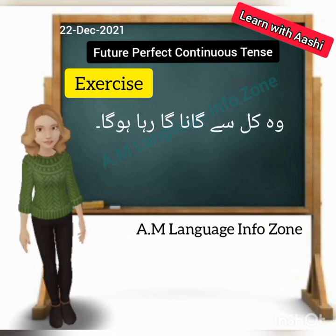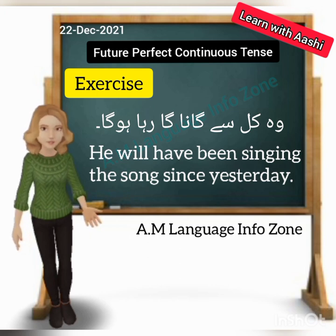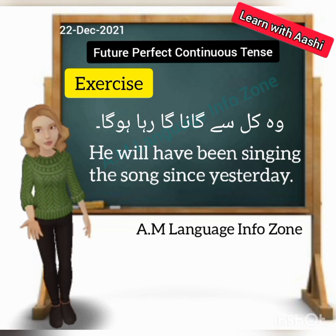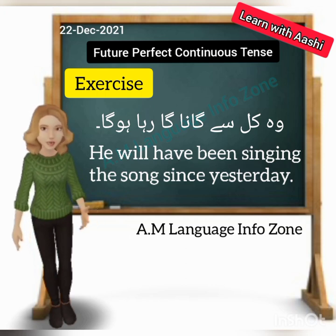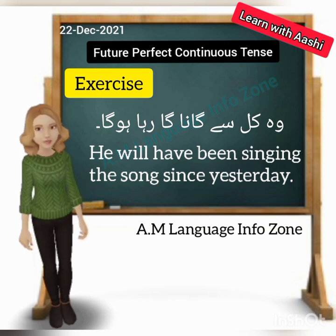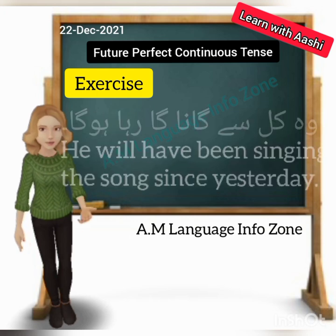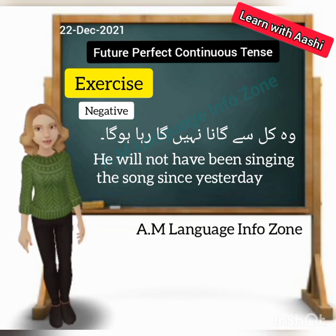'We will have been singing the song since yesterday.' An important point here: just as in Future Continuous Tense we imagine things, here also we imagine — we are not confirmed, we imagine that this work will be happening. 'He will have been singing the song since yesterday.' When we talk about yesterday, we use 'since' because it is a recently passed specific time. The negative form: 'Woh kal se gaana nahi ga raha hoga' — 'He will not have been singing the song since yesterday.'